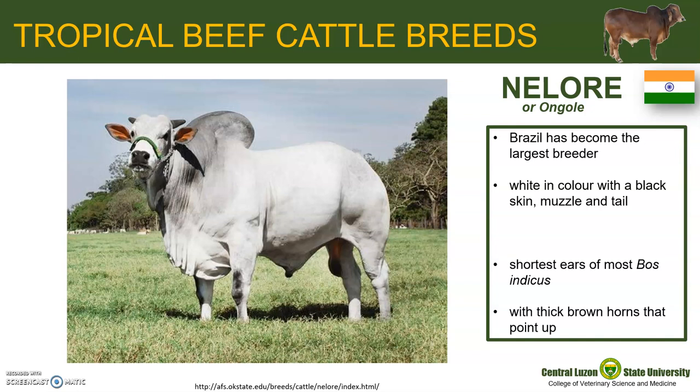Nellore is also known as Ongole. Actually, there was never a breed called Nellore in India. It was in Brazil that some authors started to use the name Nellore as a synonym to Ongole, the Indian breed that contributed most to the creation of the Nellore. Brazil has become the largest breeder of Nellore. They are white in color with black skin, muzzle, and tail. They have comparatively long legs which help them walk in water when grazing. Nellore have the shortest ears of most Bos indicus types.